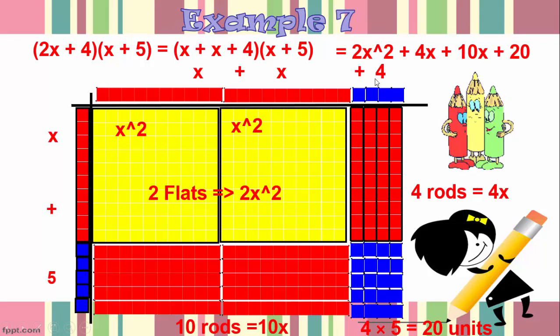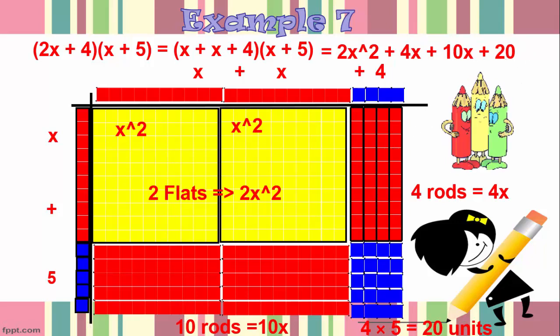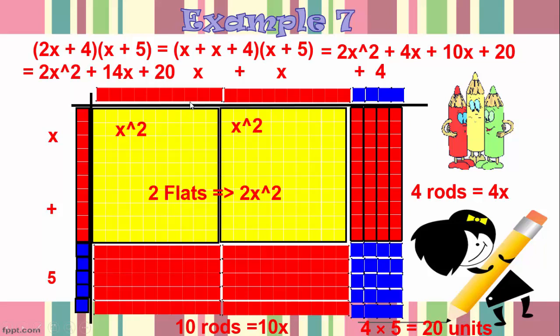I write my equation from the yellow flats: 2x squared plus 4x plus 10x plus 20. Putting this together I get 2x squared plus 14x plus 20.